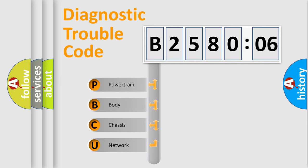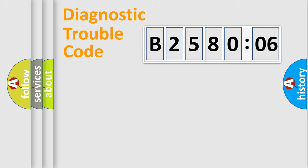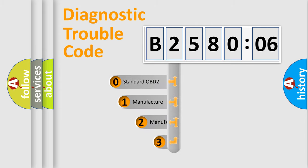We divide the electric system of automobile into four basic units: Powertrain, Body, Chassis, and Network. This distribution is defined in the first character code.